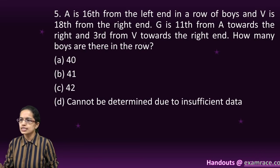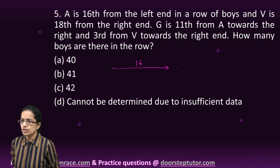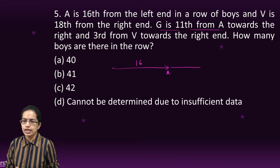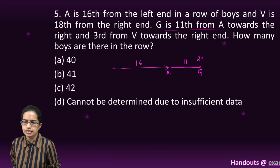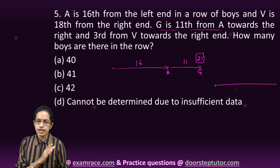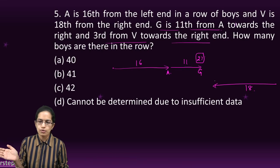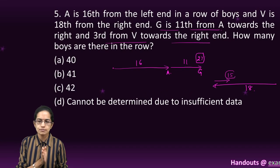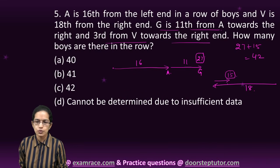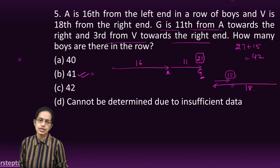The next question: A is 16th from the left. G is 11th from A, so I add 11 more, which makes D at the 27th position. G's position from the left is 27. From the right, V is 18th position. G is third from V towards the right, meaning 15th position. I add 27 and 15 to get 42, but since G's position is counted twice, I remove one. So 41 would be the right answer.